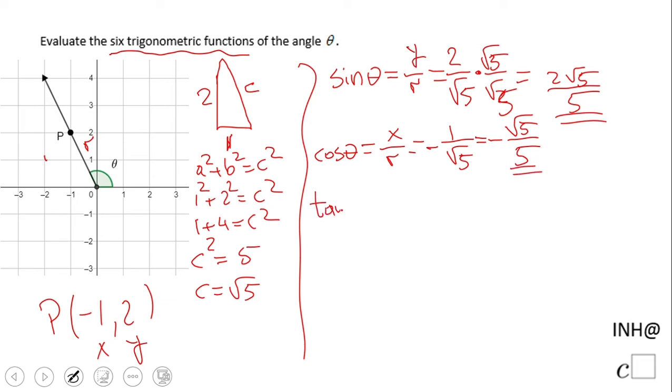Tangent of theta will be y over x, which in this case is nothing else than -2 over 1, or just -2. And then we're gonna go to the reciprocal functions.